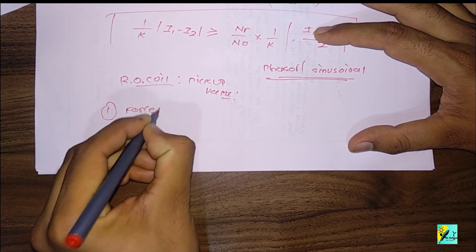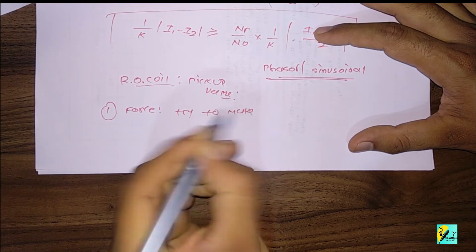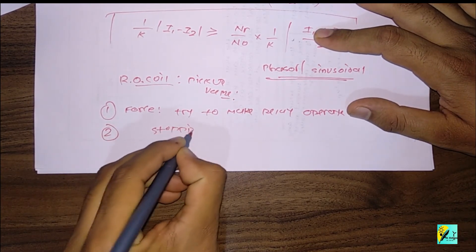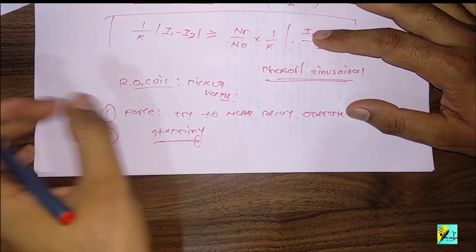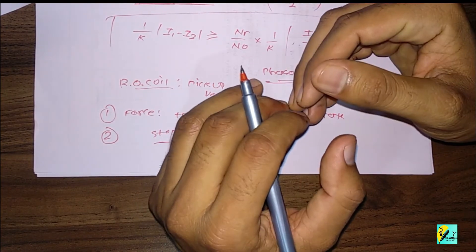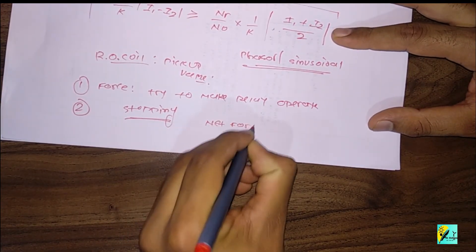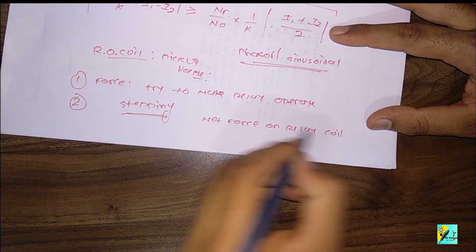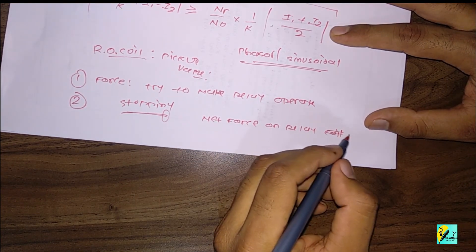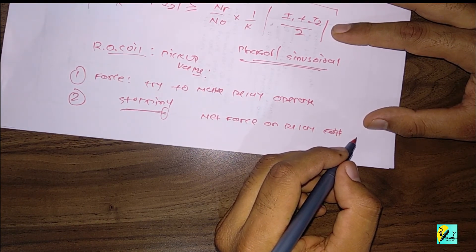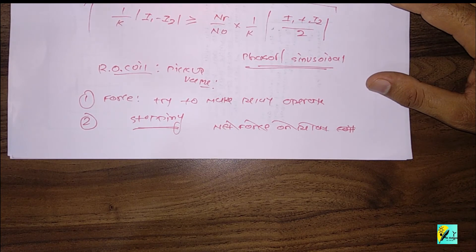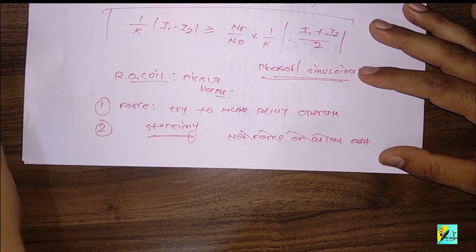There will be two forces: one force that tries to make the relay operate (the operating force), and another force that tries to stop the relay from operating (the restraining force). The net force on the relay should be more than the pickup value for the relay to operate.